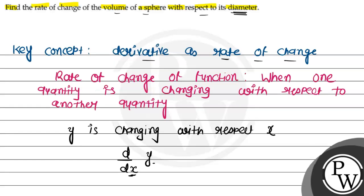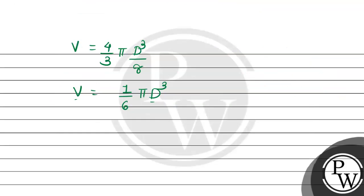But we need the rate of change. So for this, we need to take its derivative. So, the derivative of the given function dV with respect to diameter.